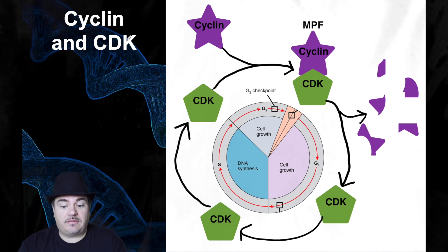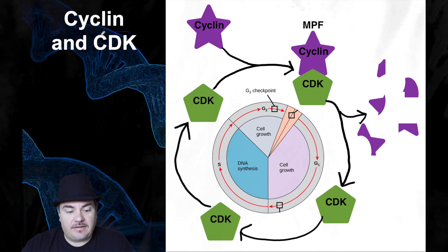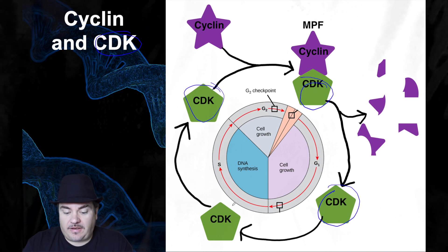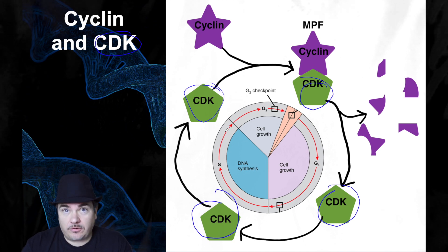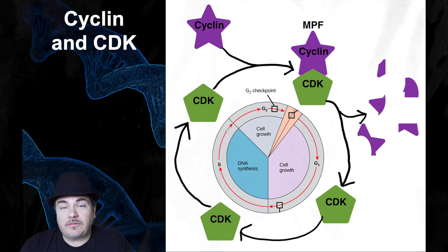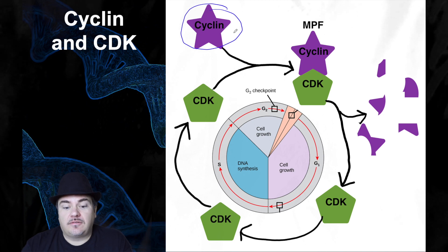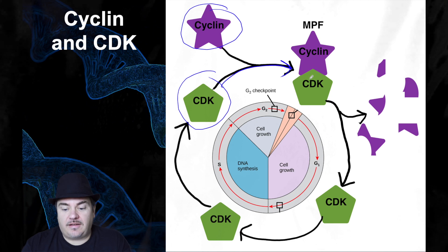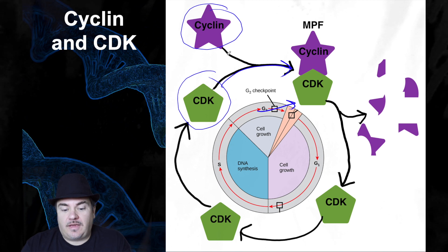CDK is always inside your cells, but its default state is switched off — it's inactive and can't do anything. What turns CDK on is cyclin. When cyclin binds to CDK, it switches CDK on and allows the cell to pass the checkpoint.